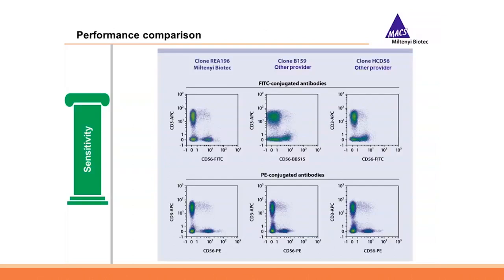Regarding antibody sensitivity, we compare our antibodies to comparable hybridoma clones available on the market. For example, the CD56 antibody clone REA196 was compared to clone B159 and clone HCD56, coupled to FITC and PE respectively. The recombinant antibody shows a much nicer resolution of the positive and negative populations, demonstrating the higher sensitivity of the antibody to the target.